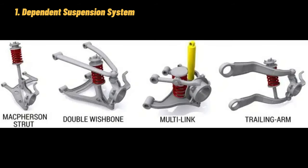1. Dependent Suspension System. As the name suggests, in a dependent suspension system, both the wheels on the same axle are dependent on each other. There is a solid or live axle that allows both the left and right wheels to connect together. If one side of an automobile bends in one direction, then the other side will also bend in the same direction. This is called dependency.